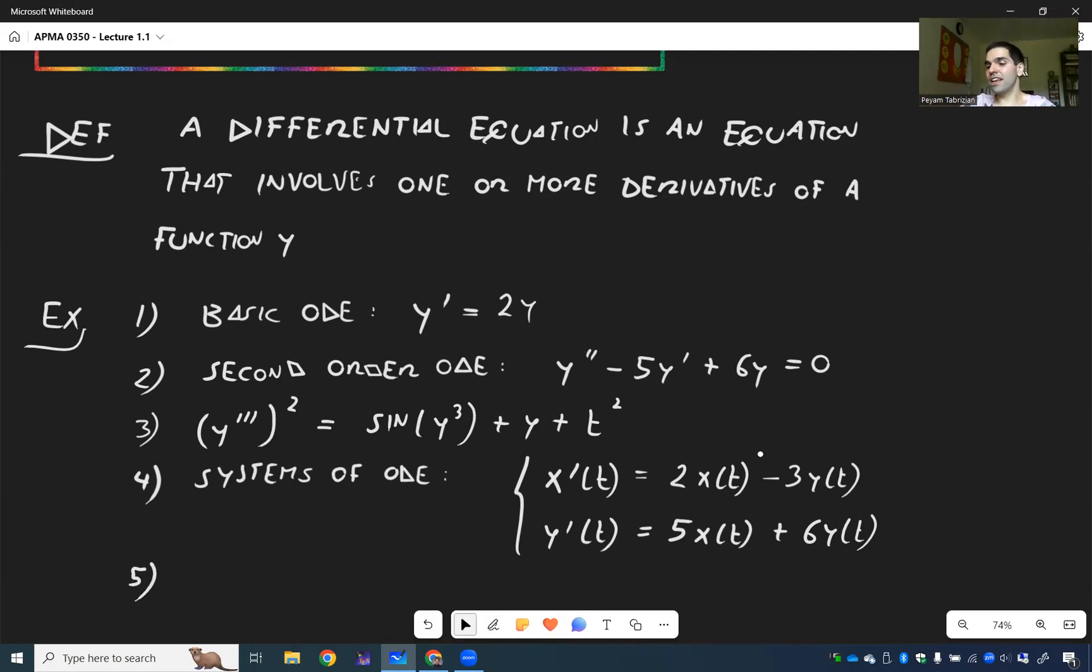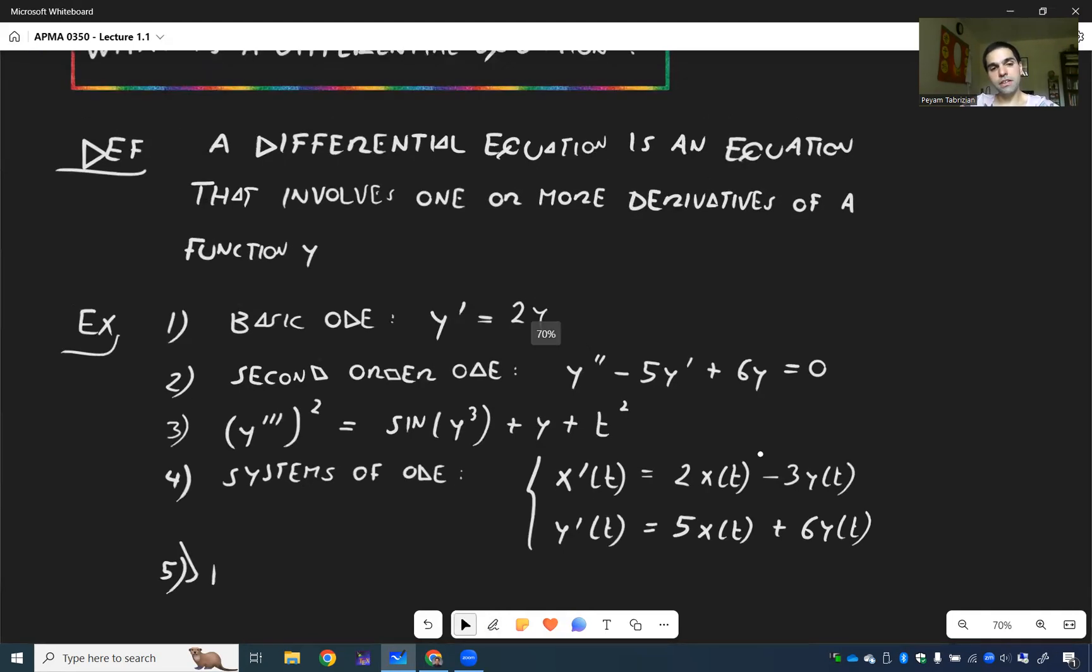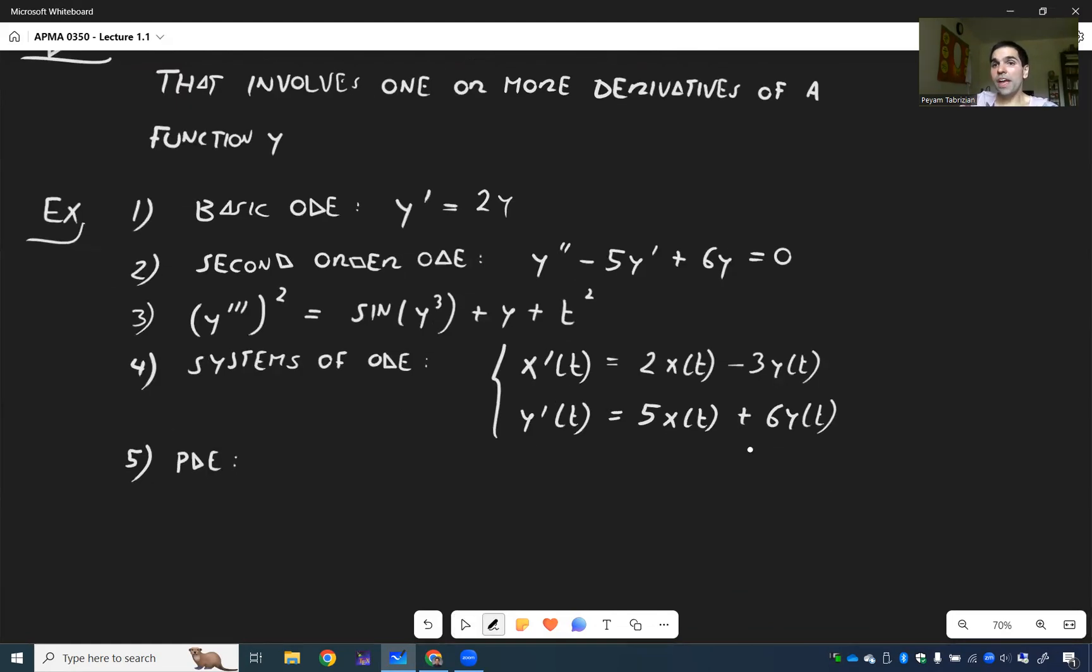And then another thing I would just briefly like to mention are what's called PDE, so partial differential equation. And that is really outside of the scope of the course, but it would be equations involving derivatives with respect to two variables. Like D squared U DX DT plus U equals DU over DX squared. Or again, here U is a function of two variables. So X is usually position, T is usually time, but this is usually covered in APMA 360.